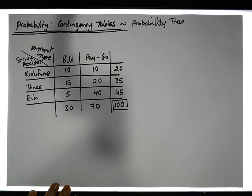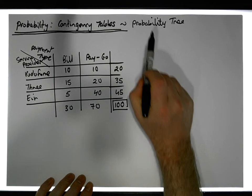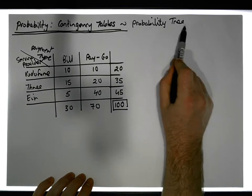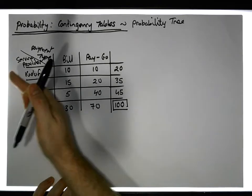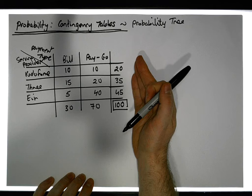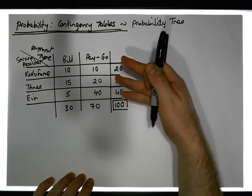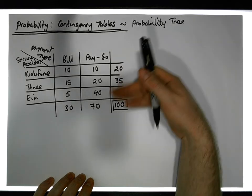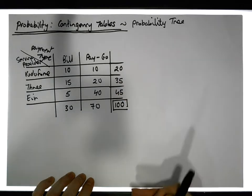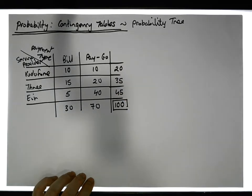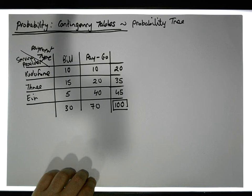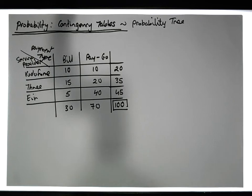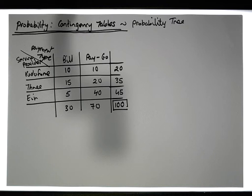Those are the types of probabilities we could calculate from the contingency table. But this video is looking at probability trees — it's a way of laying out the probabilities across a probability tree so that it's easier to actually see and look up the probabilities in question.